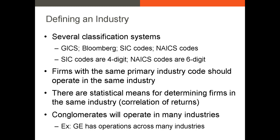We do run into some issues with codes and correlations. One of the biggest issues is that some firms are conglomerates. GE historically has been the classic conglomerate — it has operations across a variety of industries. As of the time I'm recording this video, GE is in the process of breaking up into more focused businesses, divesting several assets across several sectors.